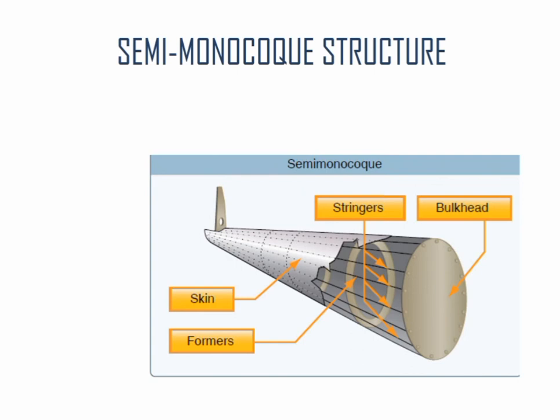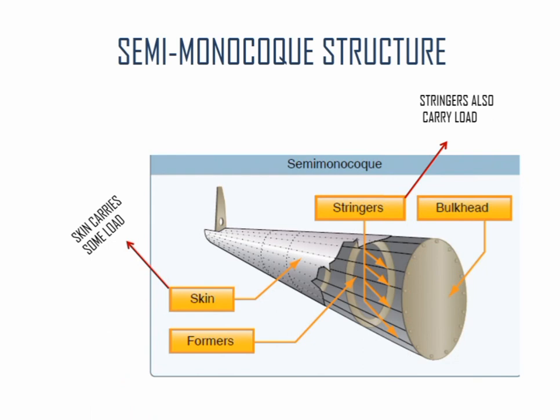Semi-monocoque structure. It is a combination of truss and monocoque structure. It contains stressed skin and stringers which both carry load, along with bulkhead and formers which support the structure.